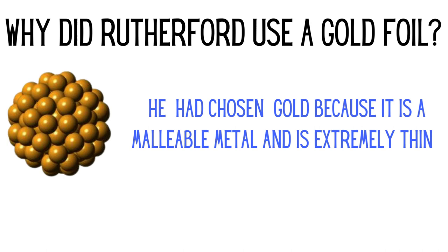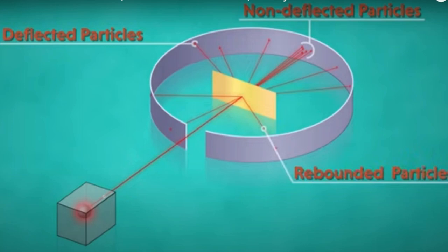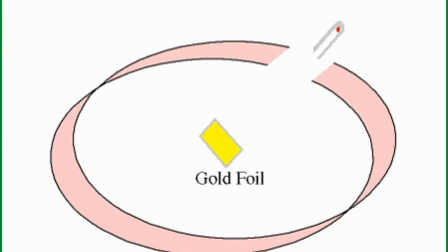When Rutherford fired alpha particles at the gold sheet, he found astonishing results. Some particles rebounded, some got deflected, and some went directly straight and made a mark directly behind the gold sheet. You can now see a particle gun, a gold foil, and a circular detector, and you can see how the particles are being rebounded, deflected, and some are going straight through.